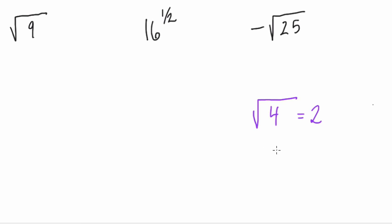However, it could also be what? Well, negative 2, right? Because 2 times 2 is 4, but so is negative 2 times negative 2. It's also 4. So essentially, these are both roots for the square root of 4.